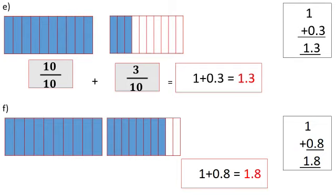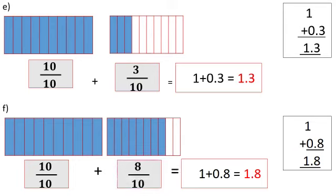Next question: look at this picture - very easy. First fraction: out of 10, 10 parts are shaded, so 10 by 10. Next: out of 10, 8 parts are shaded. Add both: 10 by 10 means 1, plus 8 by 10 is equal to decimal 0.8. Add: 1 plus 0.8 equals 1.8.